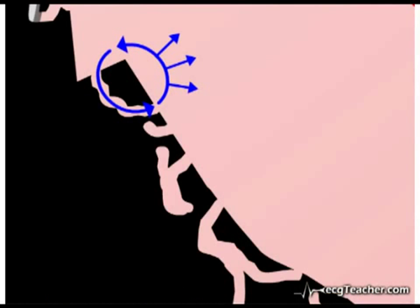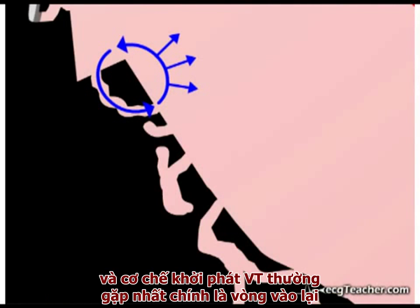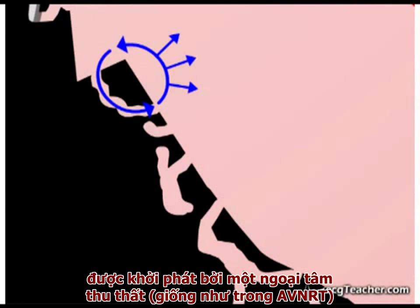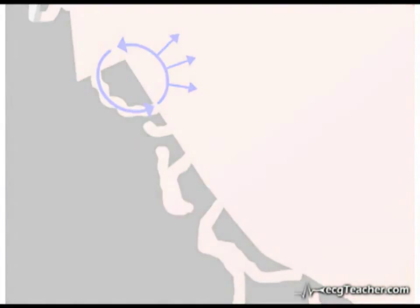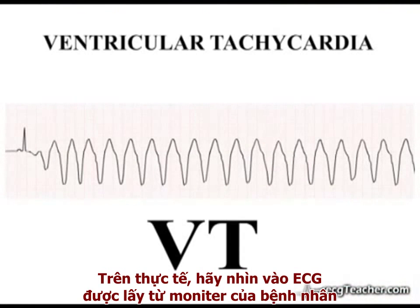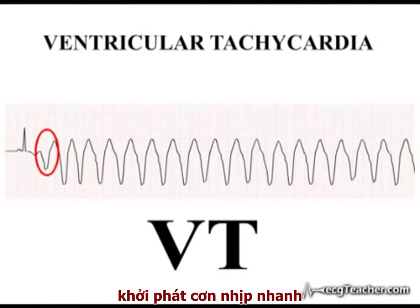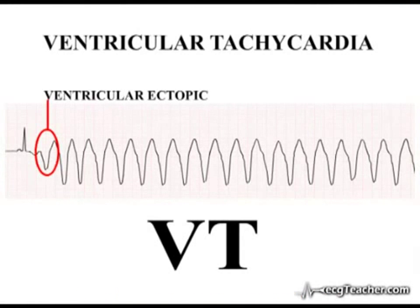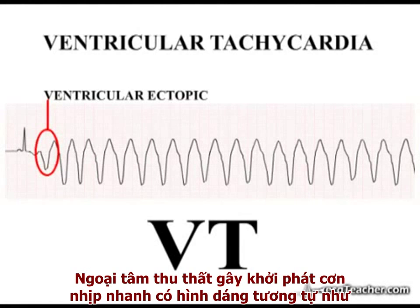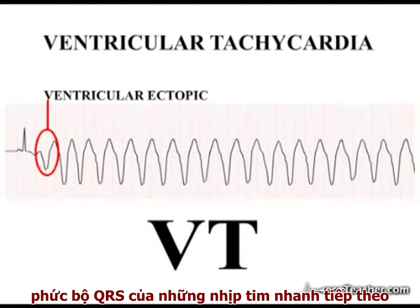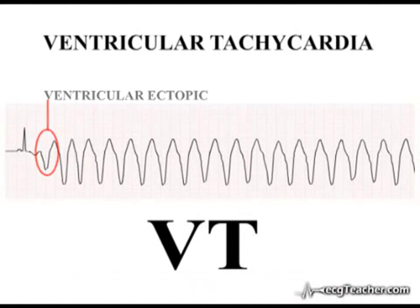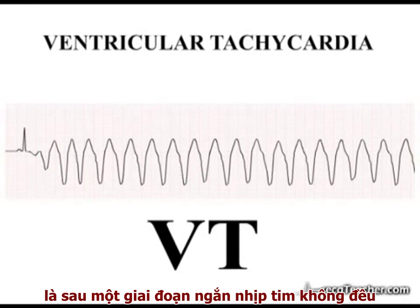As you learned in the preceding videos, these are the conditions in which re-entrant loops arise. The commonest mechanism triggering VT is re-entry triggered by premature ventricular contractions. In fact, looking back at our patient's monitor, this beat represents the initiating ventricular ectopic. You'll notice that the triggering ventricular ectopic is similar in morphology to the QRS complexes of the subsequent tachyarrhythmia.